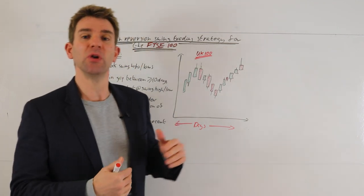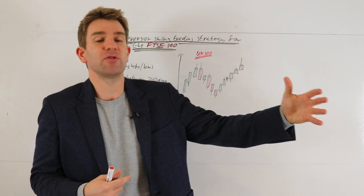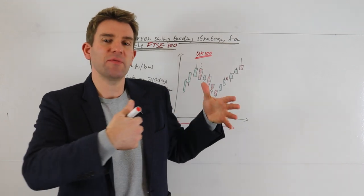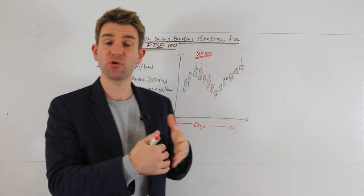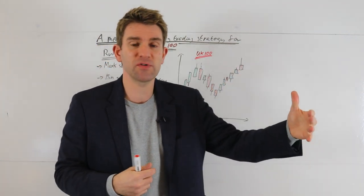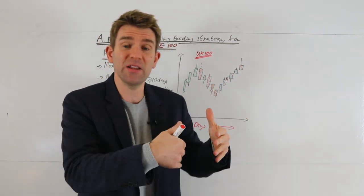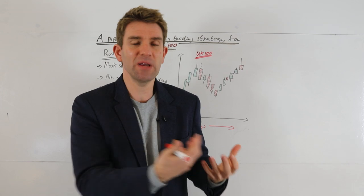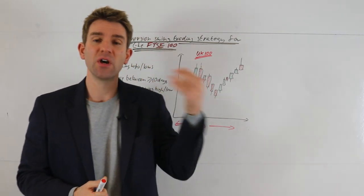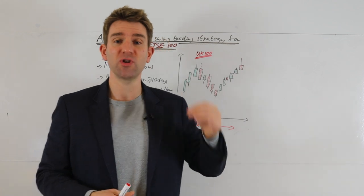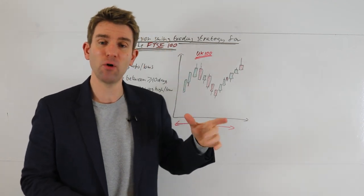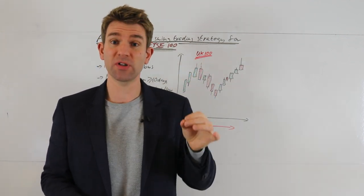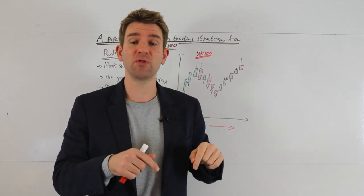Mean reversion is when we're looking for the market to stretch and come back to some kind of equilibrium — whether we're using a moving average or just some kind of spring stretching and retracing — as opposed to a trend where we're looking for a continuation of the move. If you go on to our channel sponsor Core Spreads Australia's platform, they have it listed as the UK 100. The spread is super tight — I'll link to them in the description below.